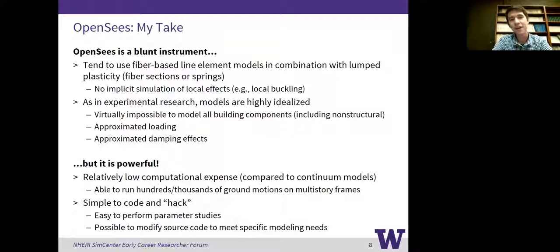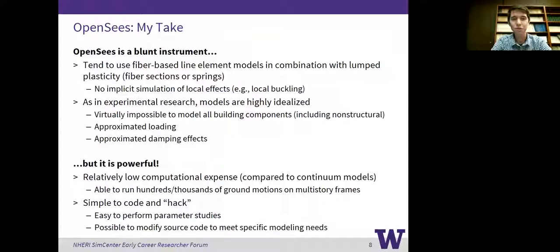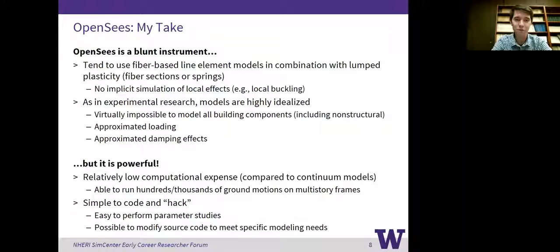The other issue is that, as in experimental research, the models we develop in OpenSees are really highly idealized — we make a lot of simplifications and assumptions in terms of how they are modeled. It is virtually impossible to model all of the building components, including all the non-structural components which inevitably affect the seismic behavior of a real building. We tend to ignore those in OpenSees, and we make approximations about gravity loads and damping effects, perhaps due to those non-structural components. We've got to understand it's a powerful tool, but it has its limitations.